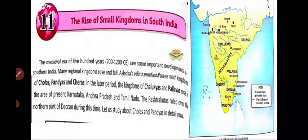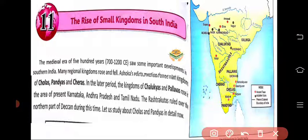The medieval era of 500 years, that is 700 to 1200 CE, saw some important developments in Southern India. Many regional kingdoms rose. Ashoka's edicts mentioned three main kingdoms: Cholas, Pandyas, and Cheras. So these are the main South Indian kingdoms we will study, and we get information about them from Ashoka's edicts.